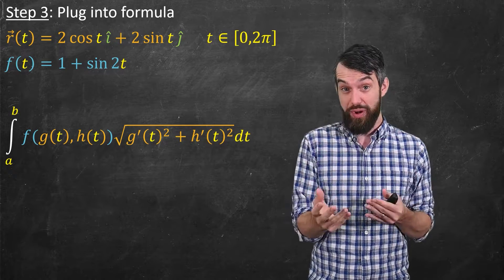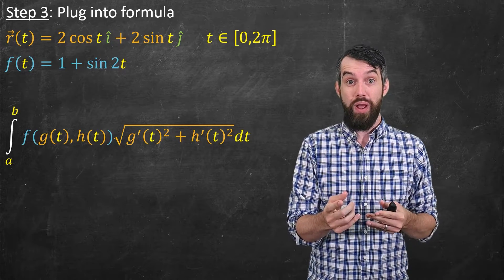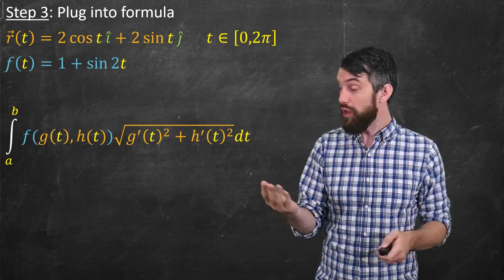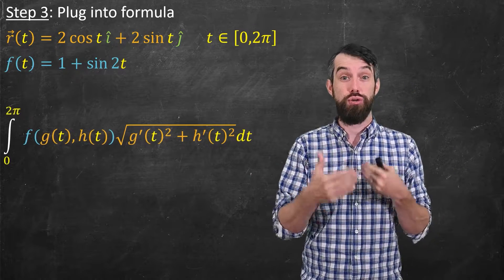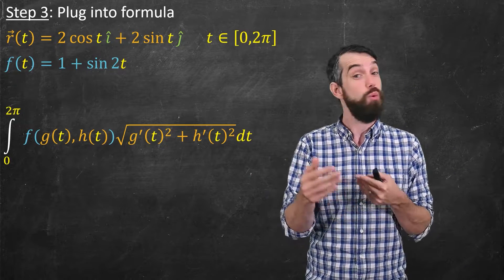Okay, a couple different things. First, let's look at the limits of integration, the a and the b. Well, since t was going from 0 to 2π, well, I'll just replace those, and I get 0 to 2π for my limits of integration with respect to t.